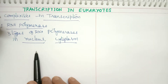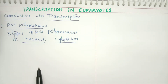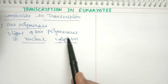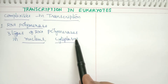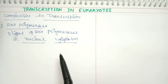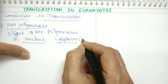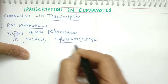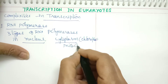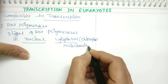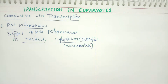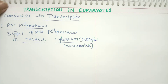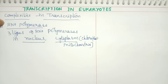The nucleus is where RNA synthesis takes place, so there are RNA polymerases there. In the cytoplasm, we also find RNA synthesis in organelles like chloroplasts and mitochondria, because they can synthesize their own proteins and enzymes. So whether in the nucleus or cytoplasm, there are three types of RNA polymerases present.